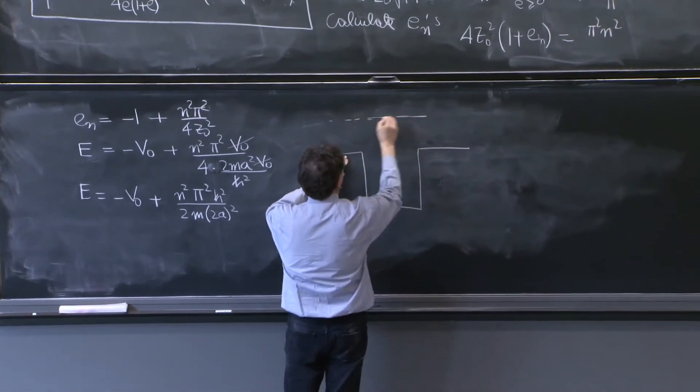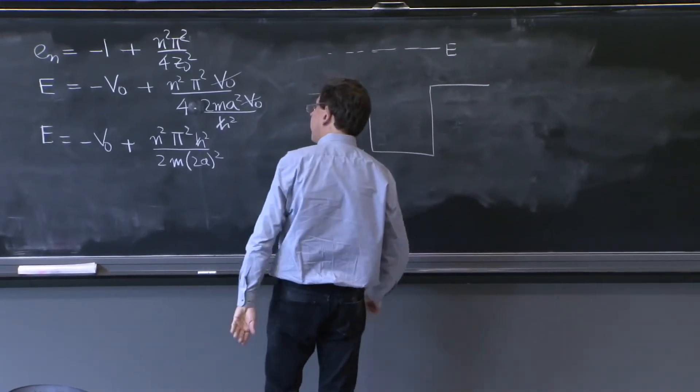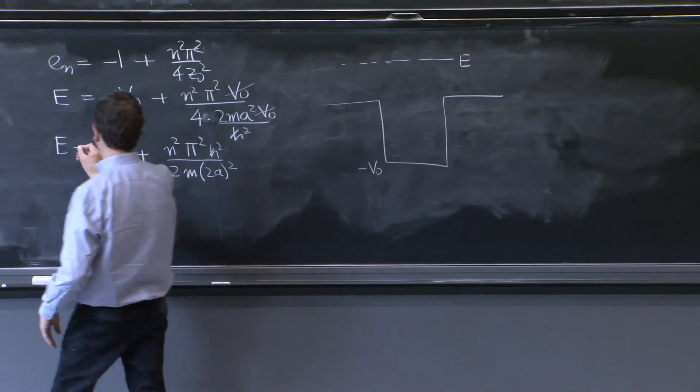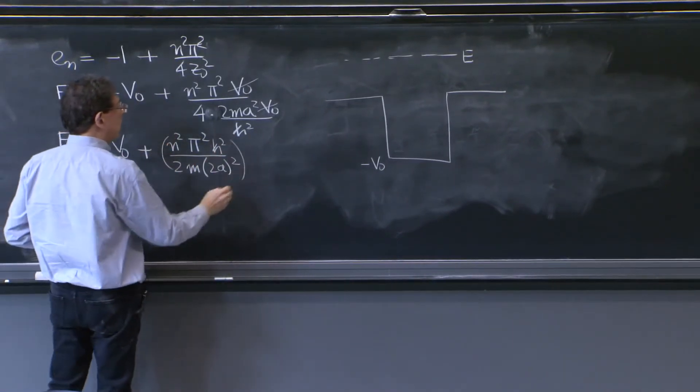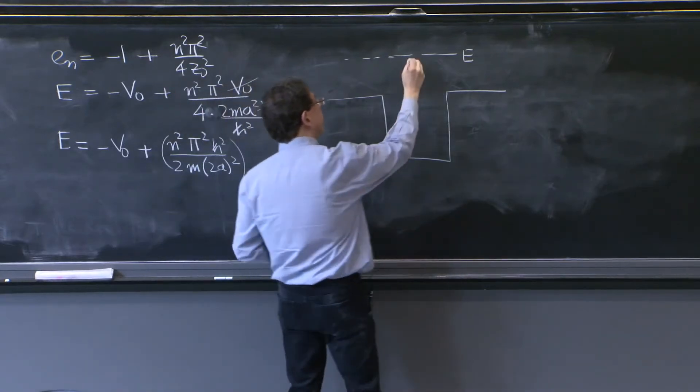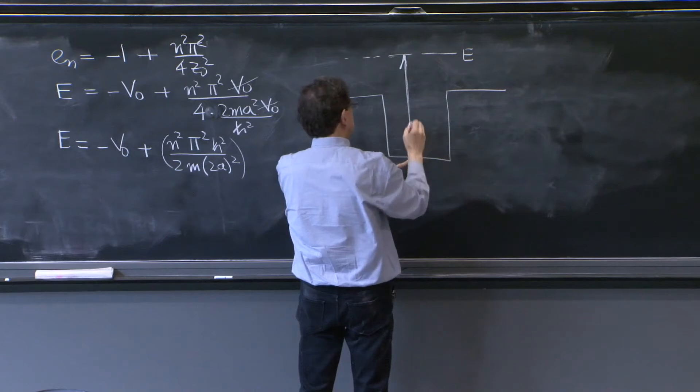In this region, there's an e here. And there's minus v0 there. So it says e is minus v0 plus this quantity.